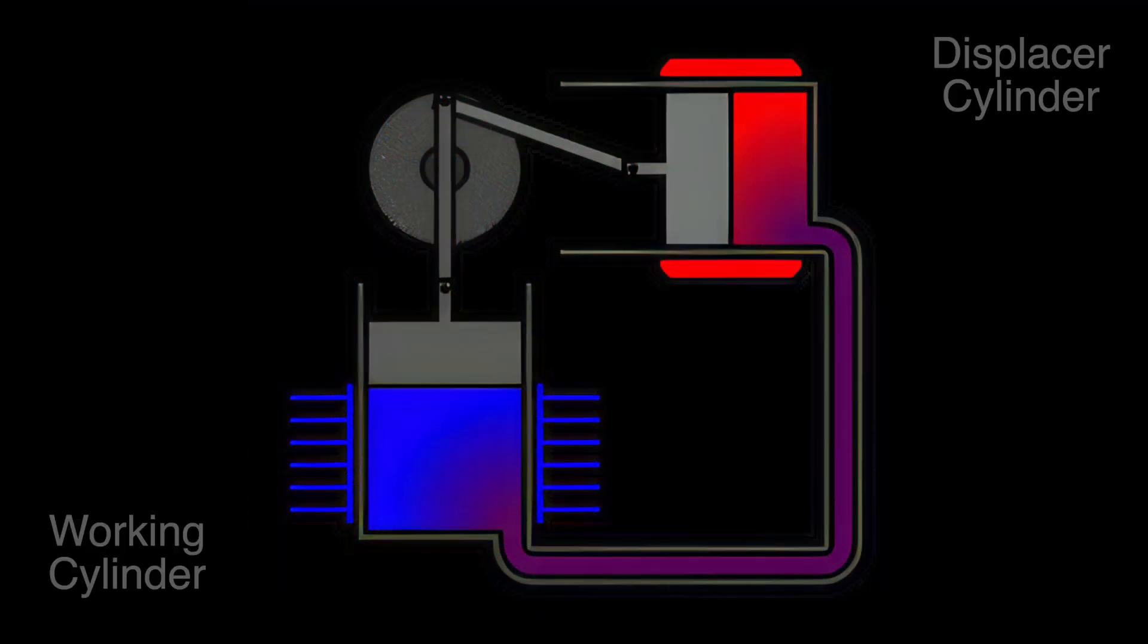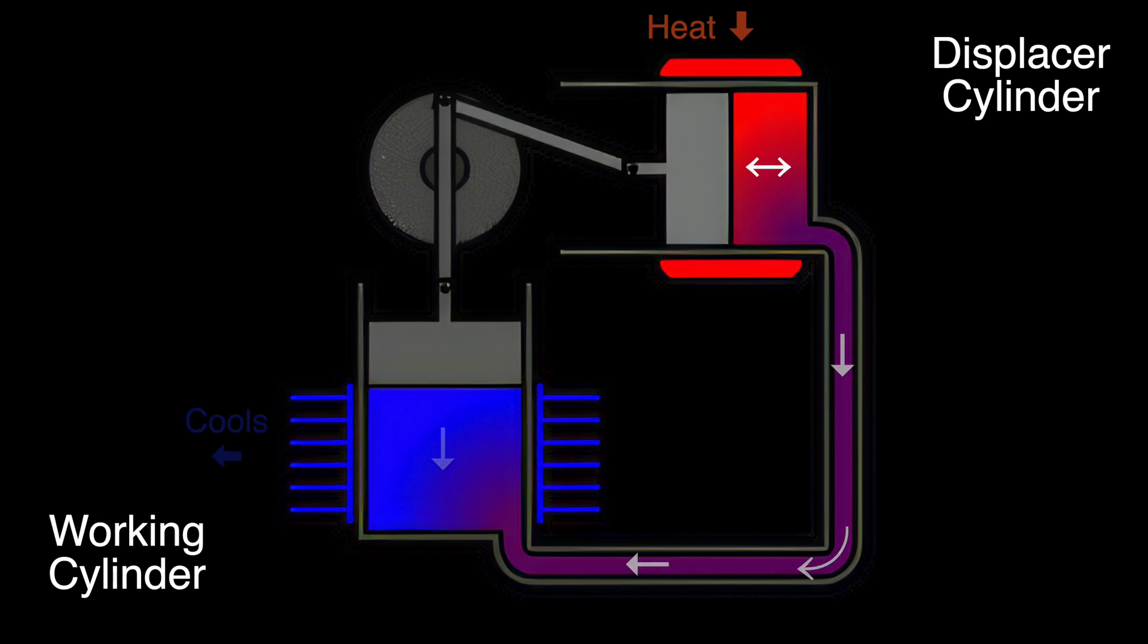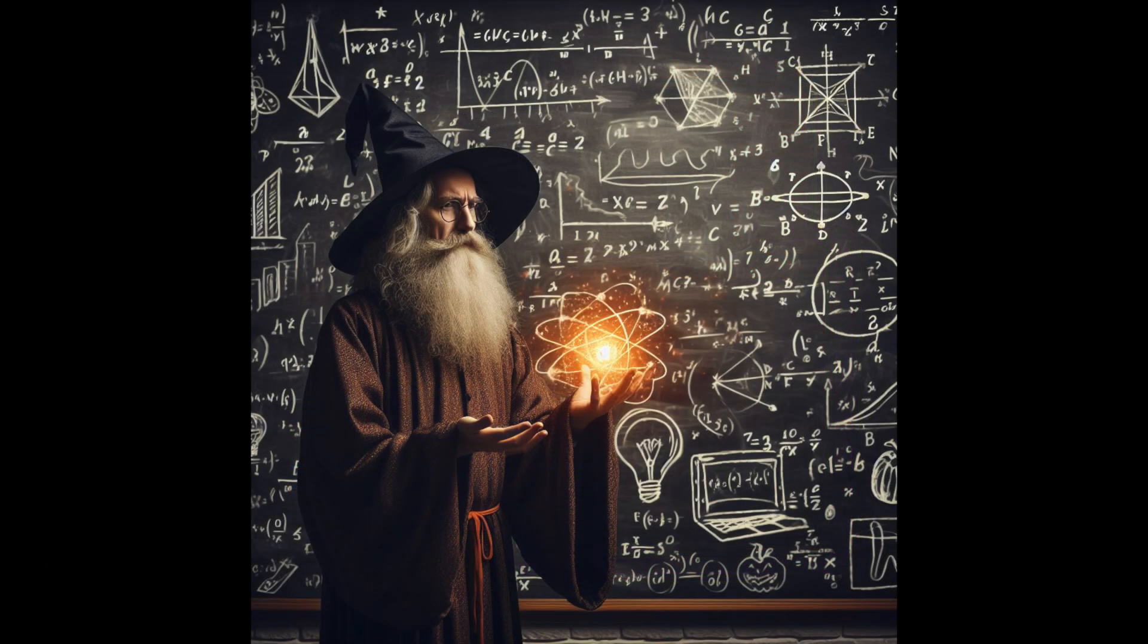A Stirling engine works by heating, expanding and moving hot air from the displacer cylinder to the working cylinder, where the air is cooled and contracts. The working piston drives a flywheel that will drive a generator and causes the displacer cylinder to return to the starting point. See? Magic!